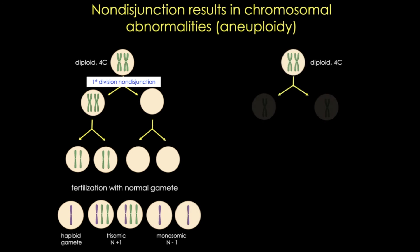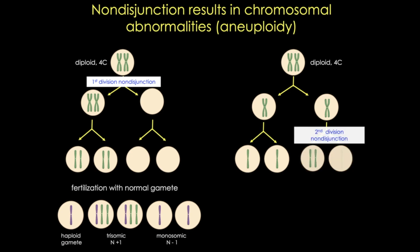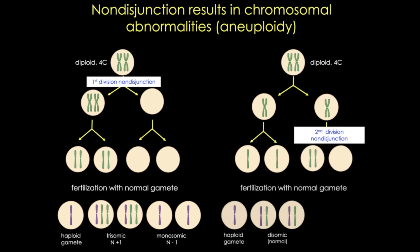Alternatively, meiosis I could occur normally, but instead of the sister chromatids segregating normally in meiosis II, non-disjunction results in two disomic embryos, one trisomic embryo, and one monosomic embryo.